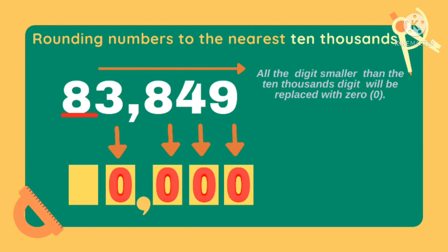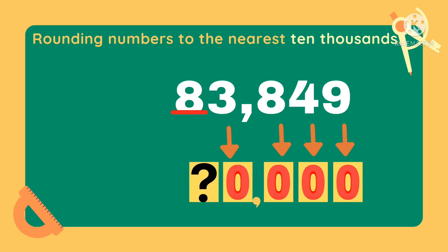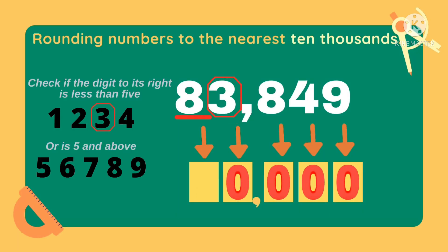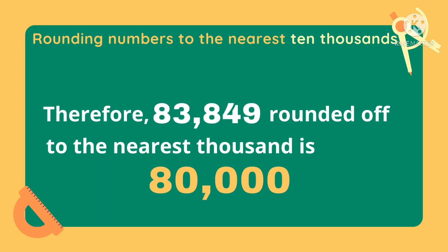Then, copy all the digits higher than the ten thousands digit. In this example, no digit is higher than the ten thousands digit, so we will now proceed to the next step. Again, we need to check if the next digit to the right of the underlined is less than 5, or if it is exactly 5 and above. In this example, since the digit is 3 and it is less than 5, we will just simply copy the digit in the ten thousands place. Therefore, 83,849 rounded off to the nearest ten thousands is 80,000.